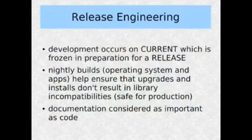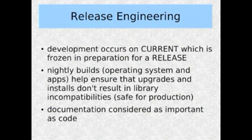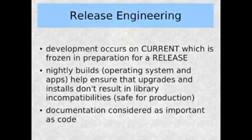Development occurs on a branch called 'current', which is frozen before it turns into a release. Every night there are build farms that build the operating system and all of its applications, helping to ensure that upgrades and installs don't result in library incompatibilities. This means that if you're using one of the released operating systems, it is definitely safe to use in a production environment. As part of the release engineering process, documentation is considered as important as code, so when a release is frozen for preparation, the documentation is brought up to date.